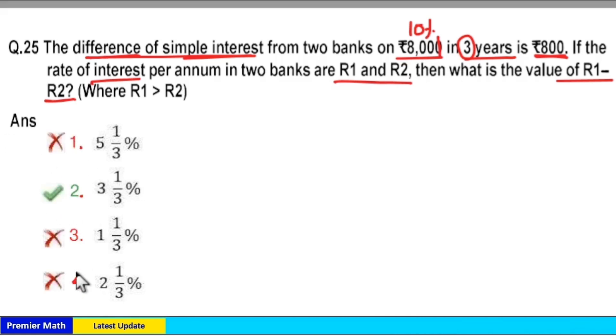Here simple interest means simple interest is generated at the rate of R percentage for T years. Now this is difference in simple interest. That is difference in R T. And here T is constant, that is 3 years. So 3 into R1 minus R2 generated is equal to 800.